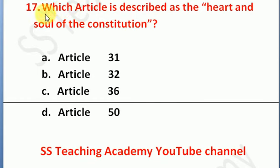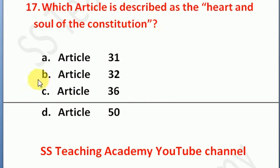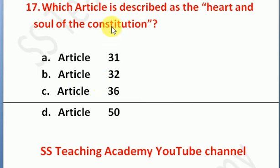Question number 17: which article is described as the Heart and Soul of the Constitution? Option A: Article 31, Option B: Article 32, Option C: Article 36, Option D: Article 50. The right answer is Option B — Article 32 is described as the Heart and Soul of the Constitution.